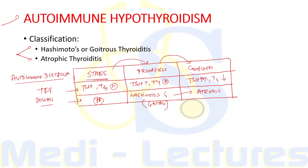The stage where TSH is elevated but T4 is normal and the patient usually has no symptoms is called subclinical hypothyroidism. In the gland, there can be development of goiter due to compensation, and this stage is where we have Hashimoto's thyroiditis. When destruction is completed, TSH levels continue to increase and T4 is now decreased, marking the stage of clinical hypothyroidism.